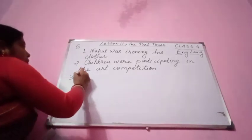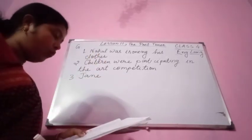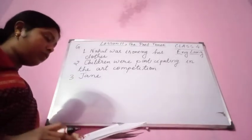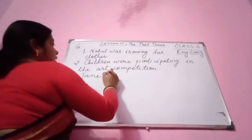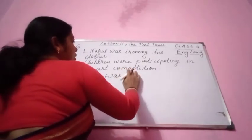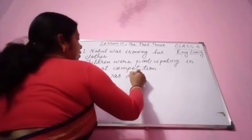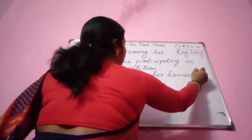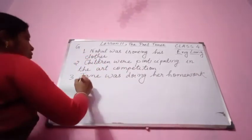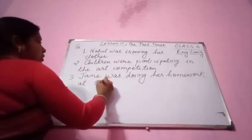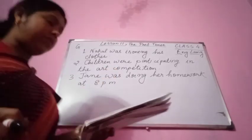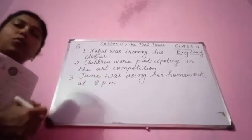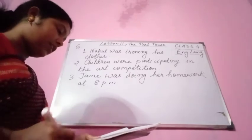Number three: 'Jane do homework 8 p.m.' Jane was doing her homework at 8 p.m. Here again, please see the subject — Jane is singular, so we are using 'was': Jane was doing her homework at 8 p.m.